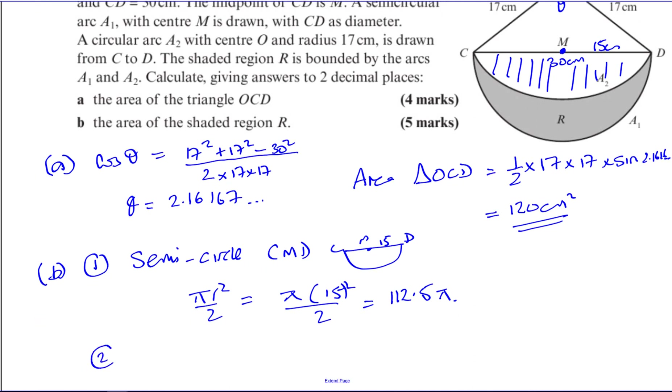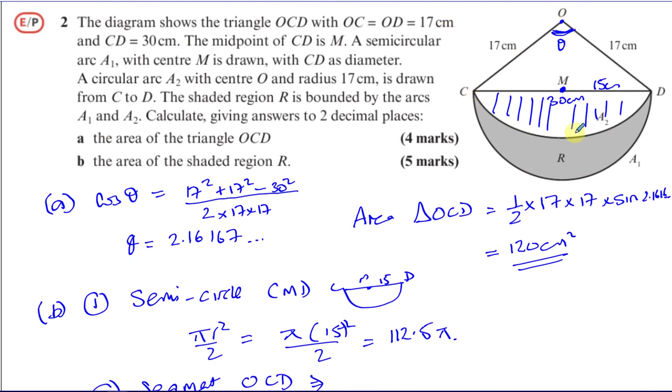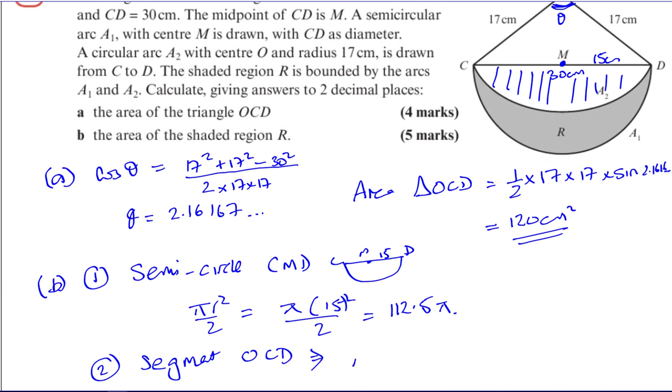We also need to find the area of the segment. The segment made from the circle OCD. The segment that's made from the circle OCD, that segment CD here. Which is equal to the area of the whole sector, the area of the whole sector OCD, minus the area of this triangle. So we can work that out as the area is equal to a half times R squared times theta minus sine theta. This is the area of the whole sector minus the area of the triangle.